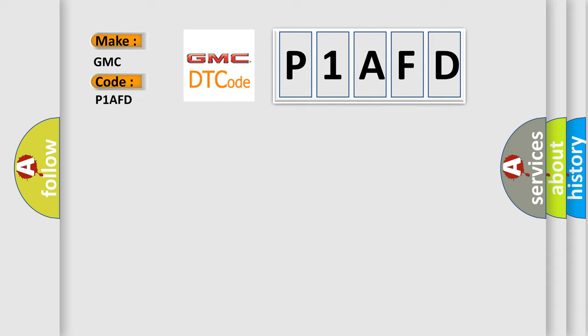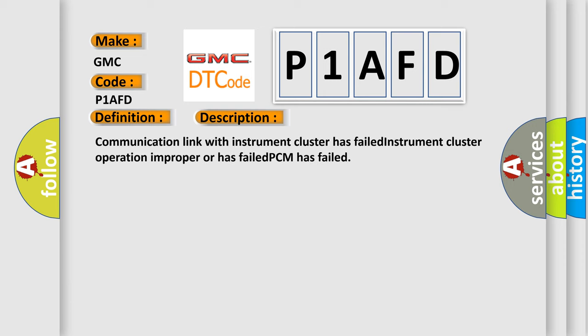The basic definition is No cluster bus message. And now this is a short description of this DTC code: Communication link with instrument cluster has failed. Instrument cluster operation improper or has failed. PCM has failed.